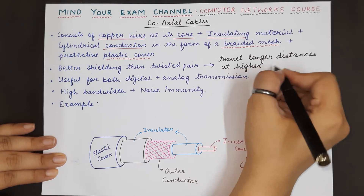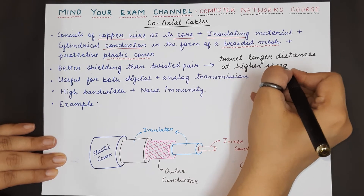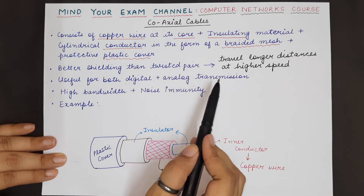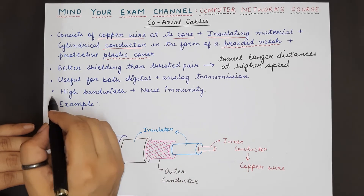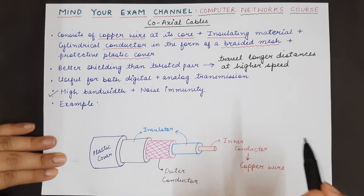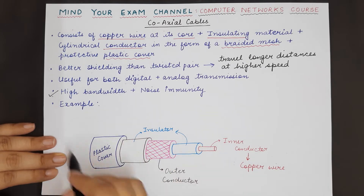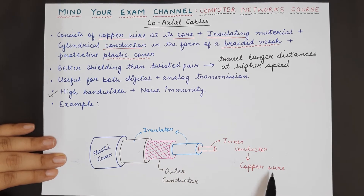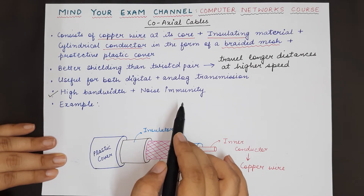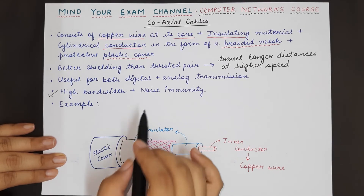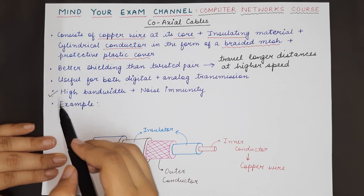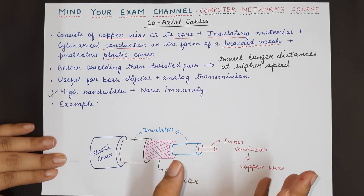Along with this there are other advantages. Like twisted pair cable, coaxial cable is also used for digital as well as analog transmission, but it has a higher bandwidth and higher noise immunity, again due to the multiple forms of shielding that covers the inner copper wire through which the signal travels. The signal does not get distorted or attenuated, and it has the capacity to carry a larger amount of data as well.